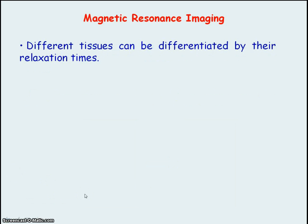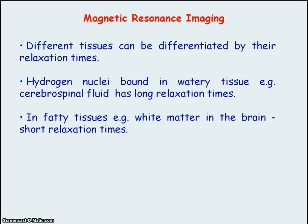In MRI, it is the radio frequency signal emitted from the relaxing nuclei that is detected. Different tissues have different relaxation times, so you can differentiate between tissues according to their relaxation times. Hydrogen nuclei found in watery tissue will have long relaxation times, whereas in fatty tissues they will have short relaxation times.